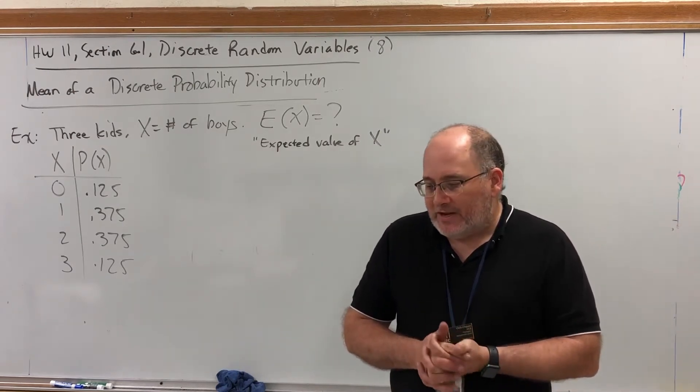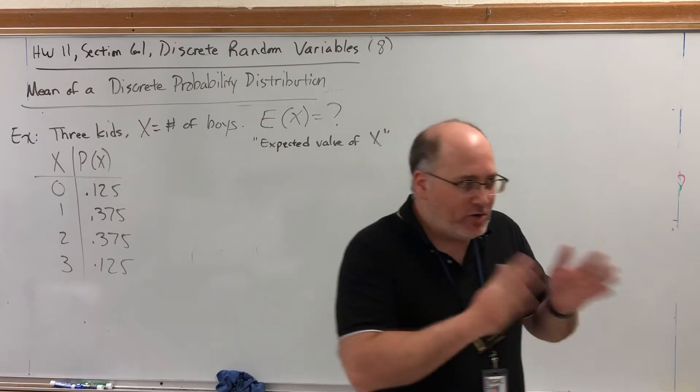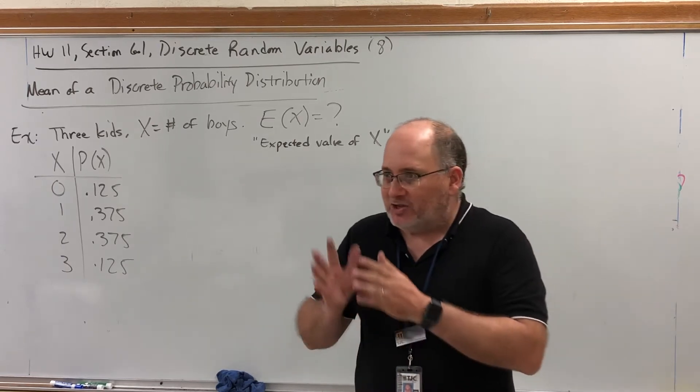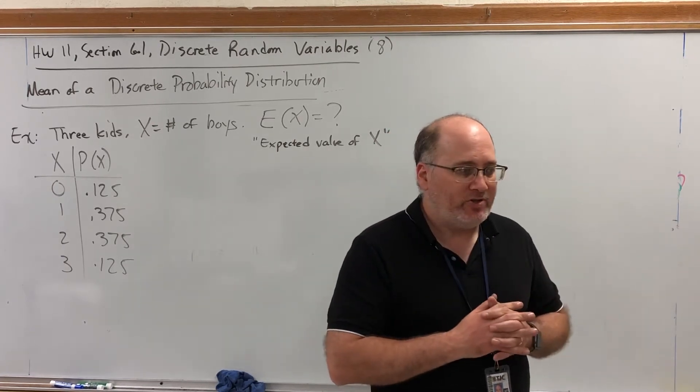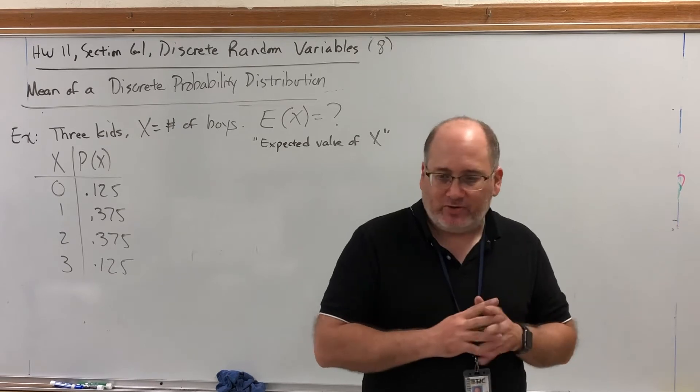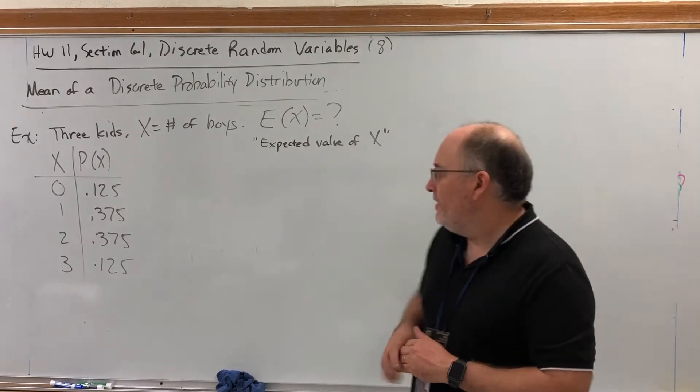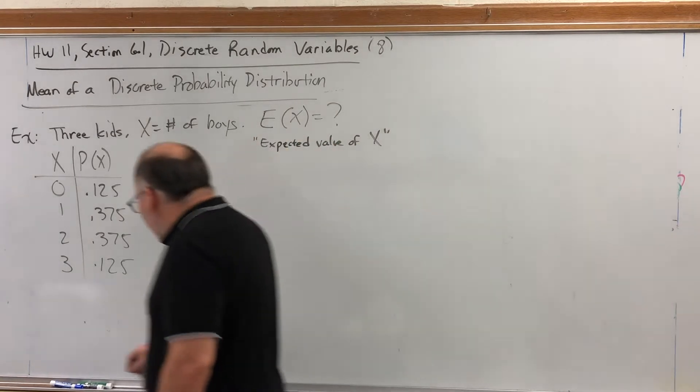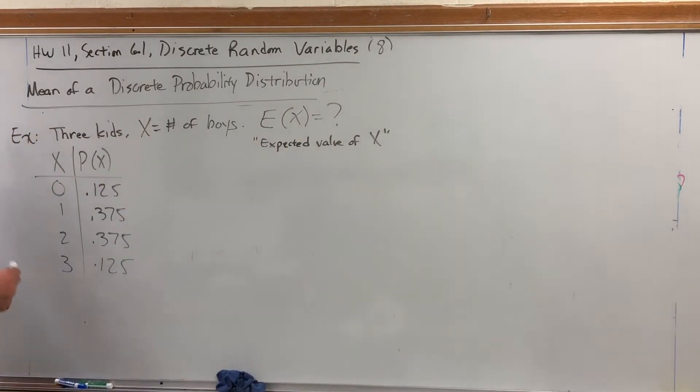But what that would mean is, on average, if we took everybody who has three kids and took all of their answers to how many boys do you have and averaged those answers, we should get 1.5, and that's what expected value would mean. But let's confirm what our intuition is probably saying about the expected number of boys being 1.5 by actually doing the formula.